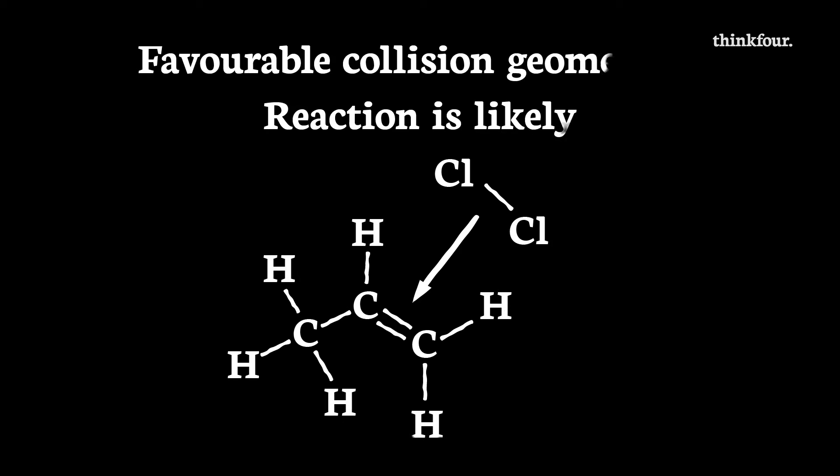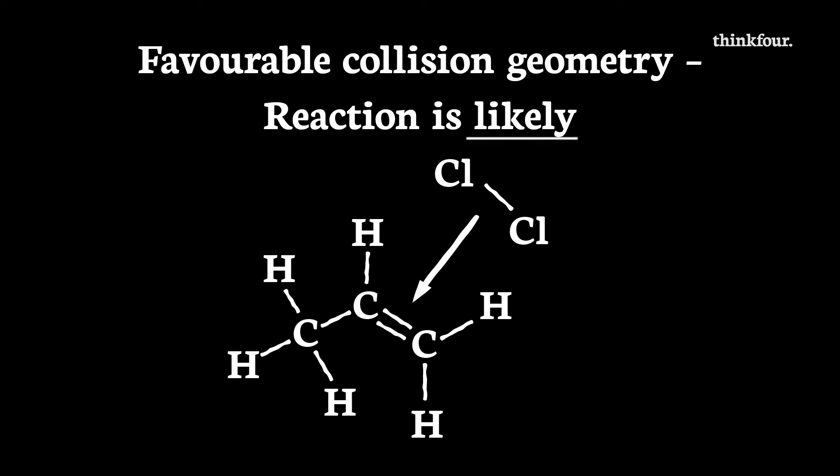But if Cl₂ hits the double bond at the right angle, an addition reaction will be possible. I'm using a lot of conditionals here — should, could, might — why am I not sure?